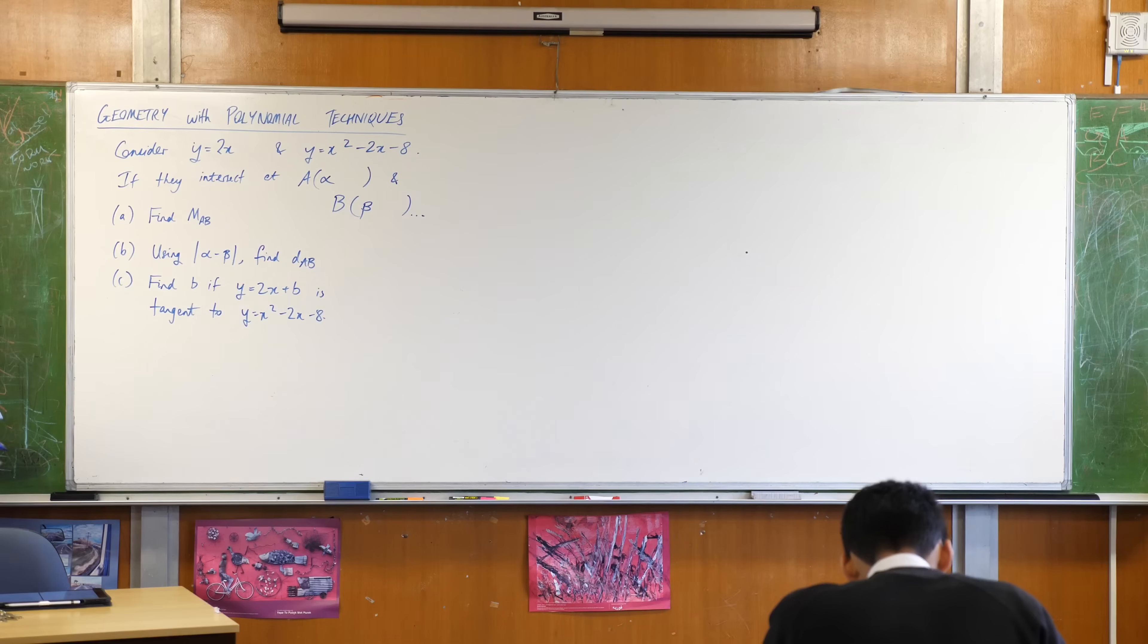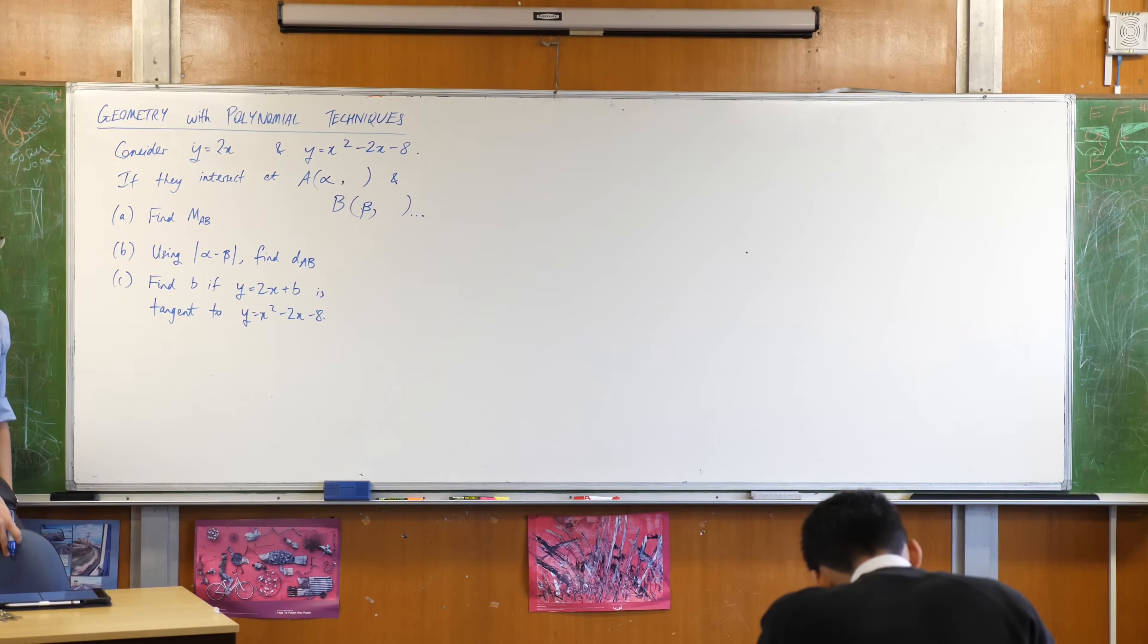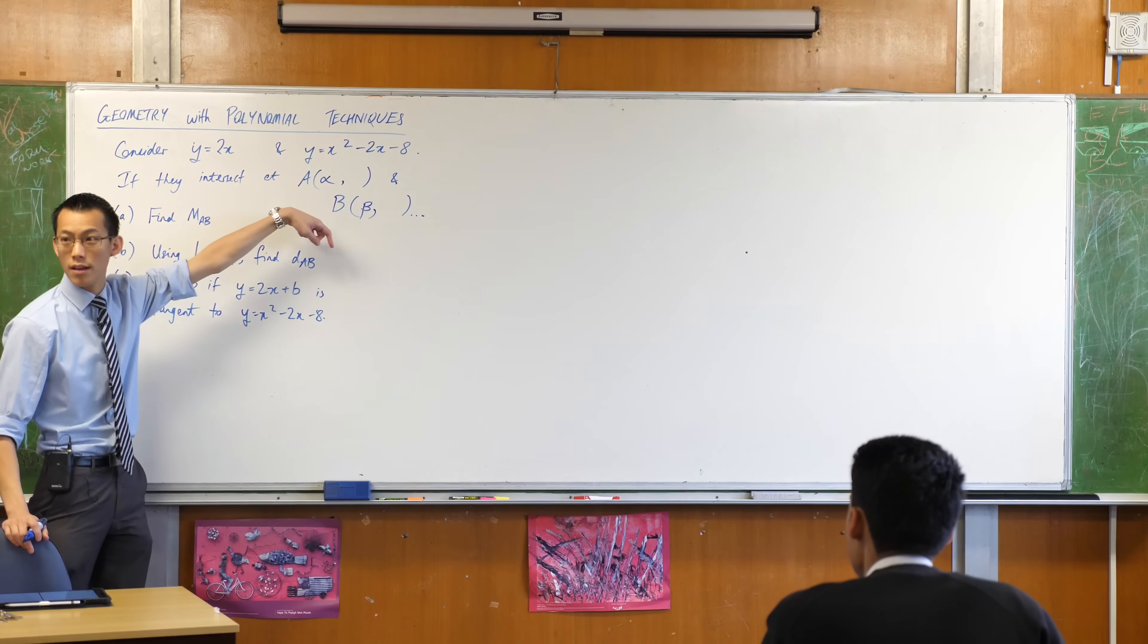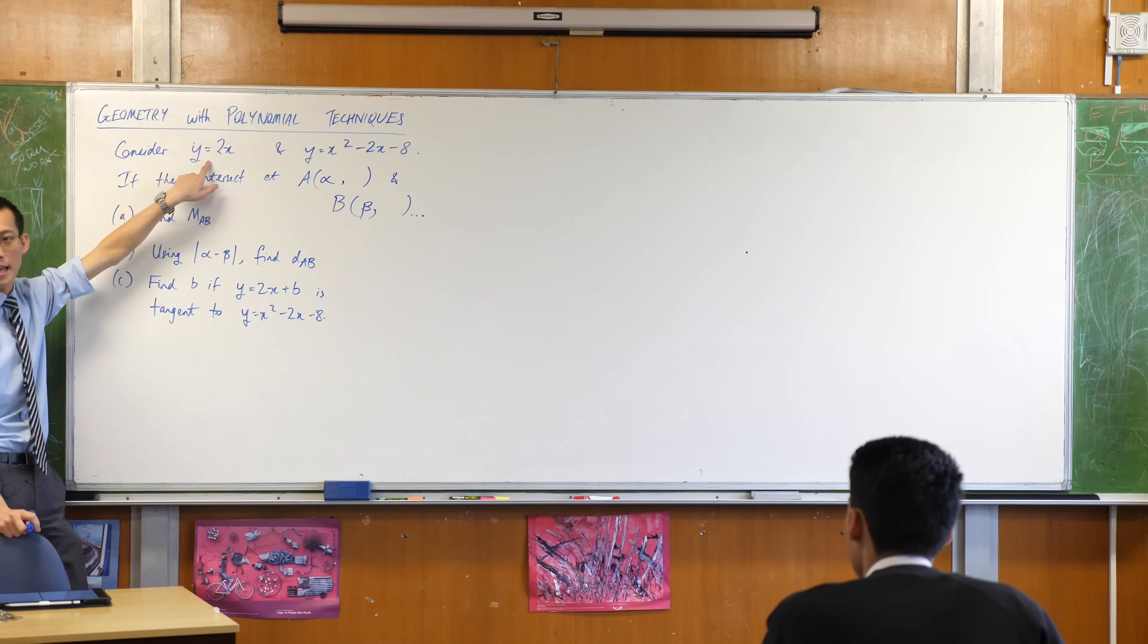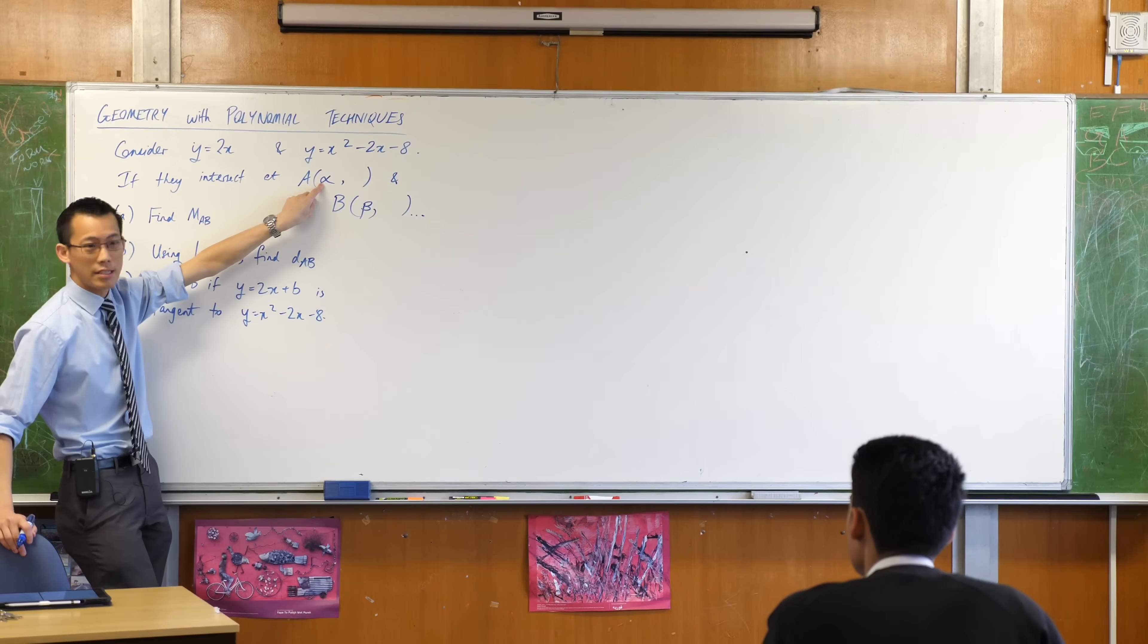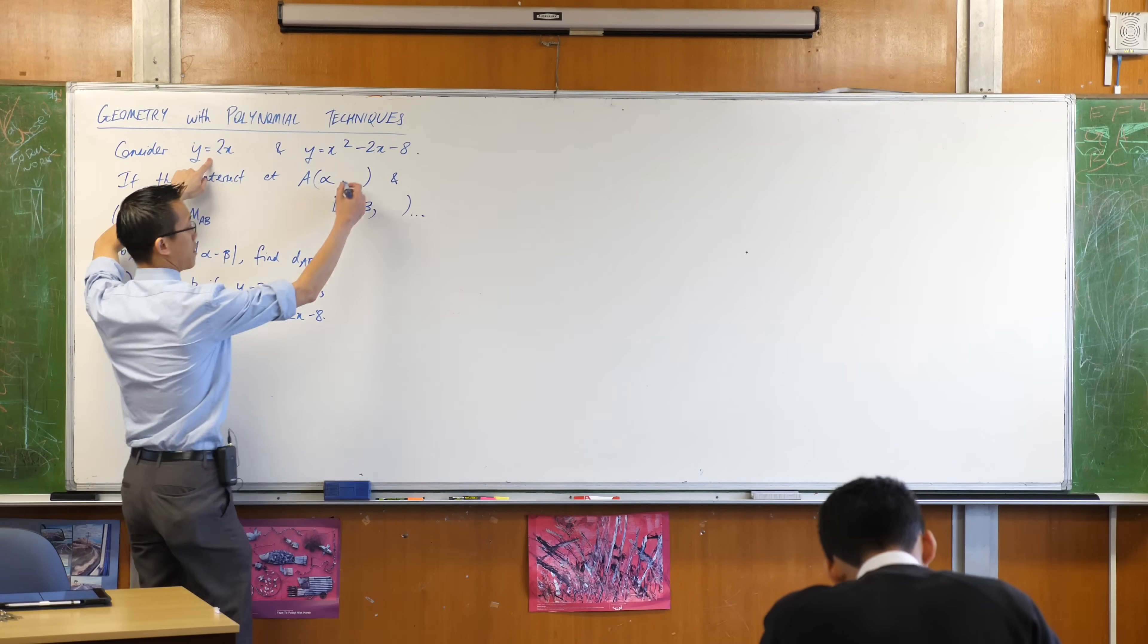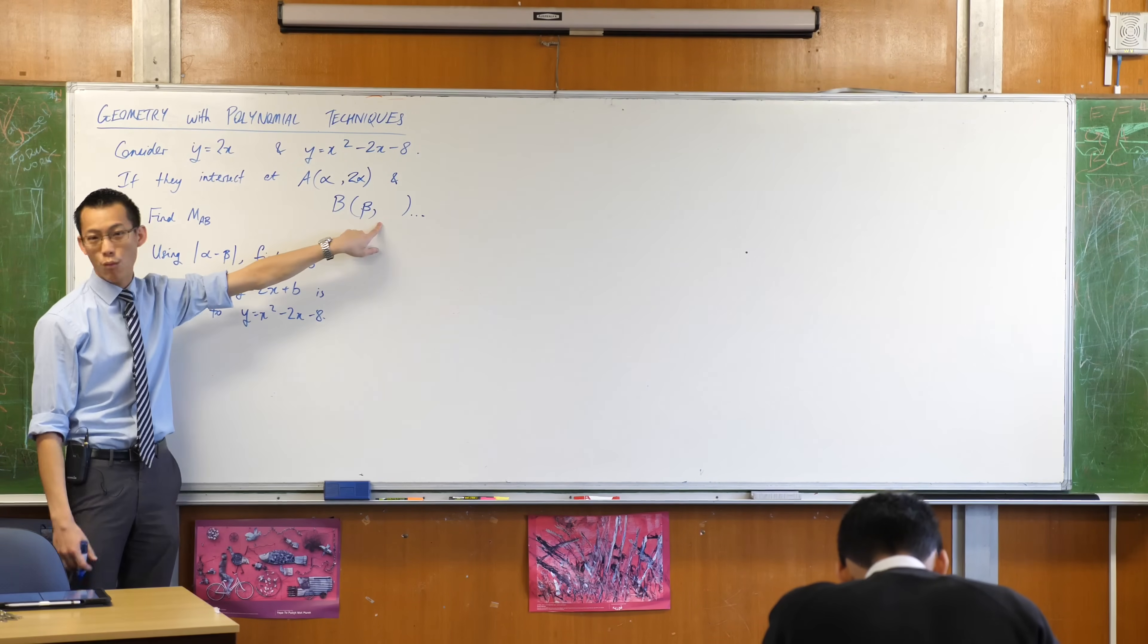I could call the y coordinates something completely random, but I don't have to because I know that if these points of intersection are between this line and this parabola, then at the very least they must both lie on this line. If the x coordinate of this is alpha and it lies on this line, then what's the y coordinate? It's 2 alpha, because y is literally two times the x value which is alpha. In the same way, this is beta and 2 beta.